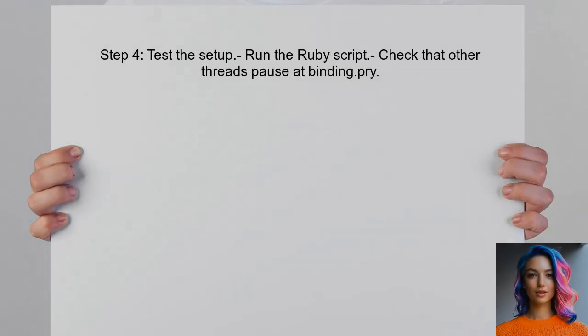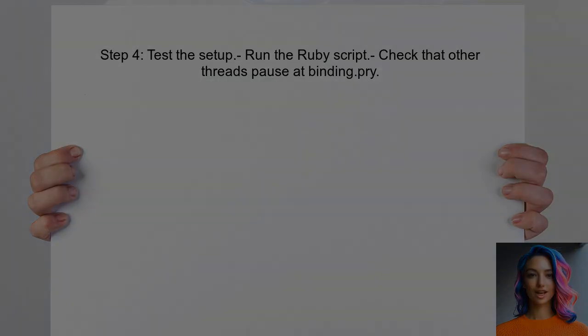Finally, test the setup by running your Ruby script. When you reach the binding.pry line, other threads should stop sending output to the console.